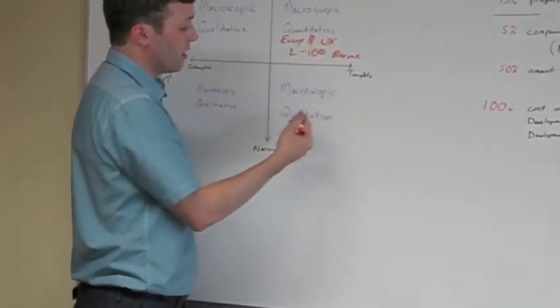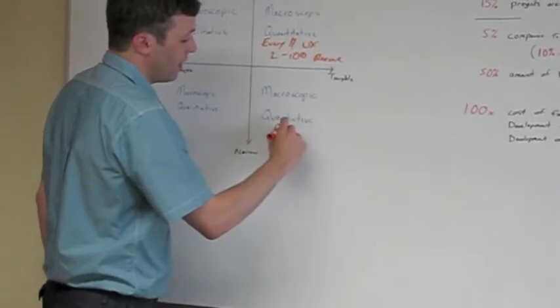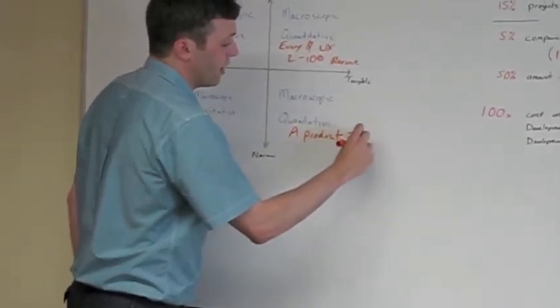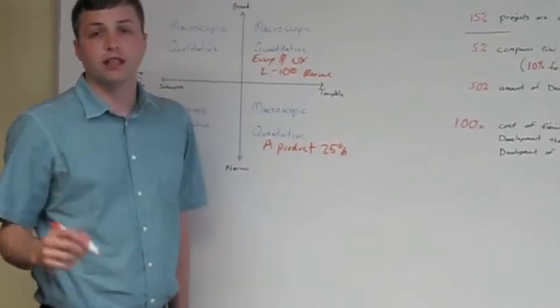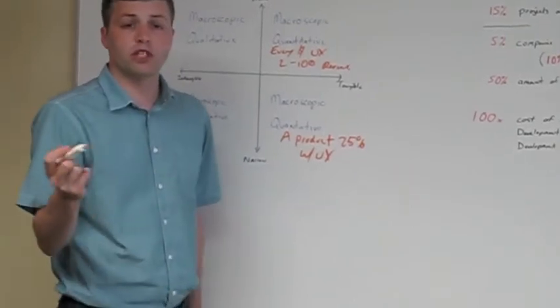Once you get to it, if you look at macroscopic and quantitative, this is where if a product has UX, there's 25% less to produce with UX. So once again, we're still talking numbers here.